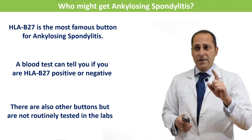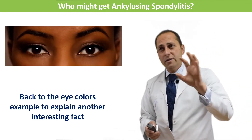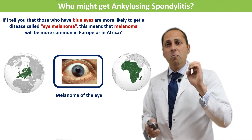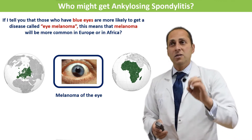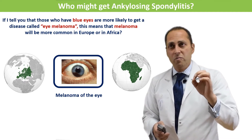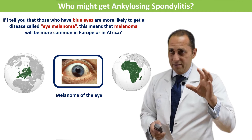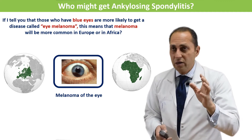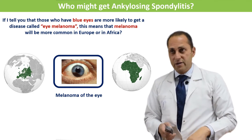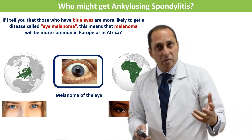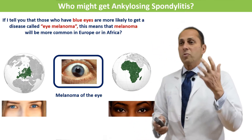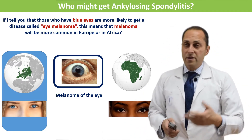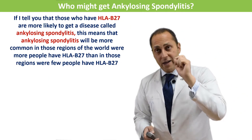Back to the eye colors example, to explain another interesting fact about ankylosing spondylitis and B27. If I tell you that those who have blue eyes are more likely to get a disease called eye melanoma, this means melanoma will be more common in Europe or in Africa? Remember: Africa — very few people have blue eyes. Europe — so many people have blue eyes. So probably you will find more patients with eye melanoma in Europe than in Africa.